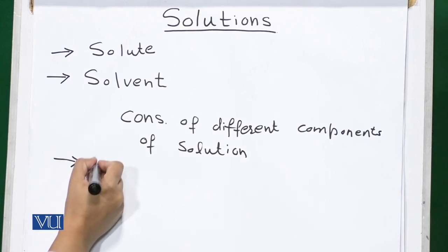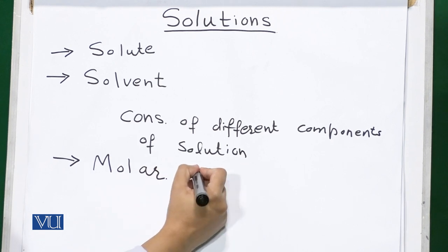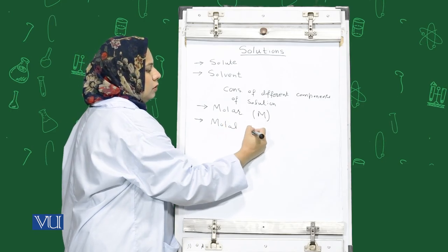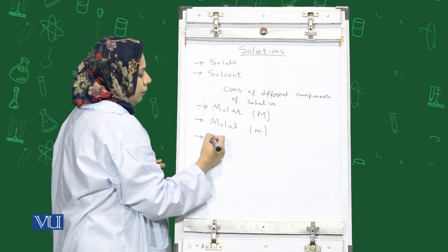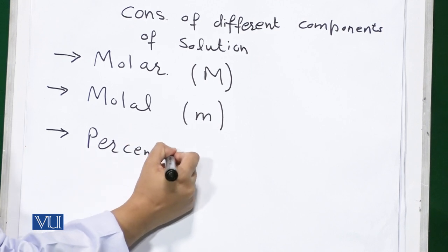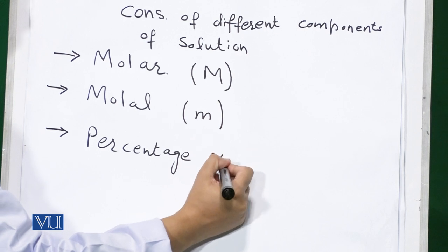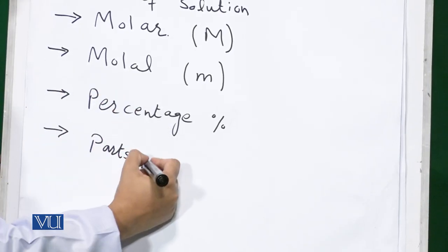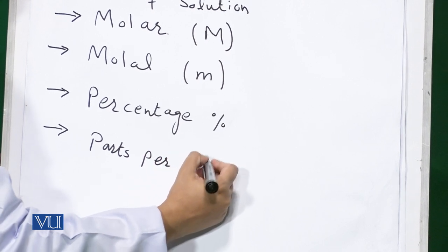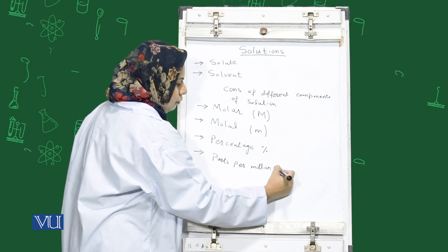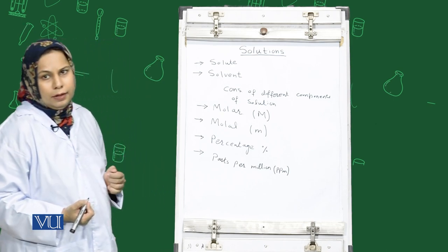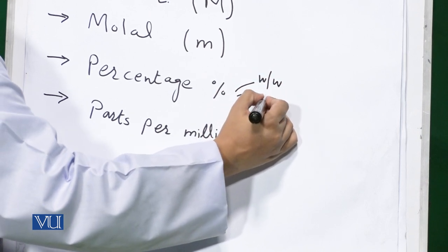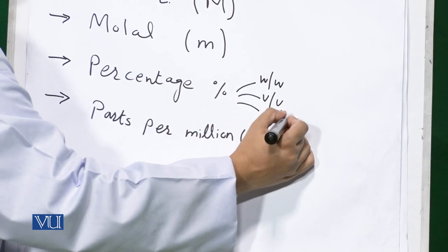For example, molar solution which is represented by capital M, molal solution which is denoted by small m, percentage solution, and parts solution. We will talk about parts per million, denoted by PPM. Further, percentage solutions can be divided into weight by volume, weight by weight, and volume by volume.